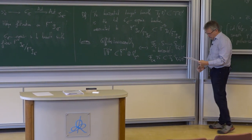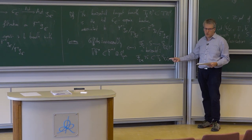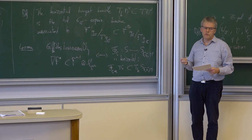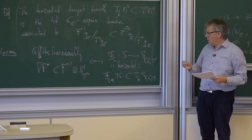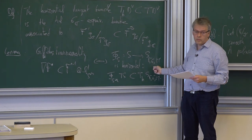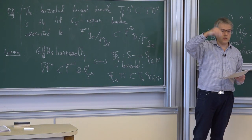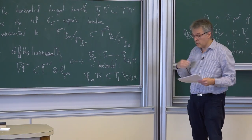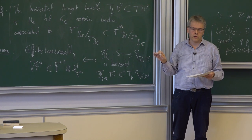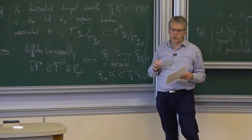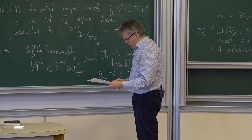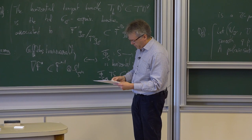For people familiar with Shimura varieties and Hermitian symmetric spaces, those manifolds have negative curvature from the complex point of view. This is completely different for the spaces Γ\G/M, because they have vertical fibers which are flag varieties of smaller dimension and are positively curved. However, this result tells you that you are in a very special — horizontal — direction where, morally, you have all the negative curvature properties of usual Shimura varieties. This plays a big role later.